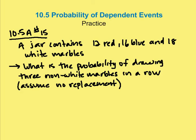Here we have 10.5A number 15. We have a jar that contains 12 red, 16 blue, and 18 white marbles. And we're asked to find the probability of drawing three non-white marbles in a row.